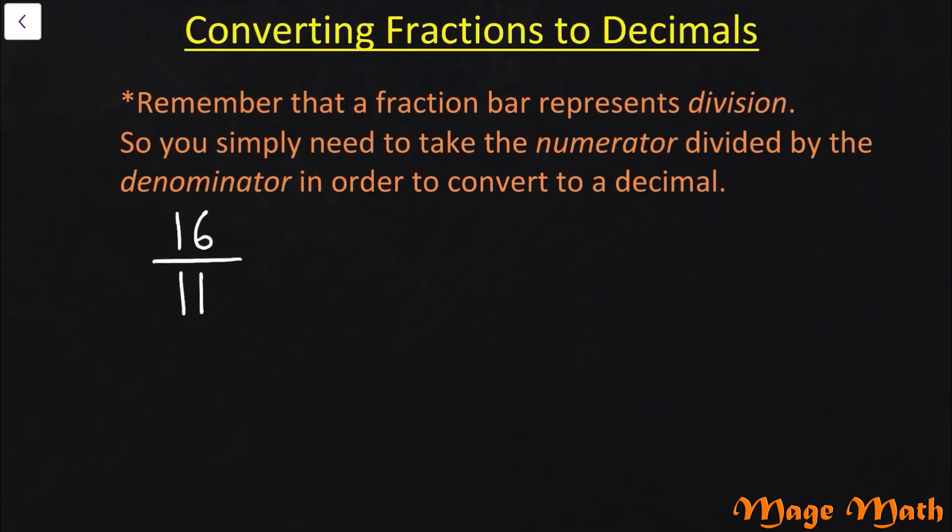Something else you could have is what we call an improper fraction, which is where the numerator is greater than your denominator. For example, we have a fraction here of 16 over 11, and certainly I think we can all agree that 16 is greater than 11. So unlike all the other examples, our numerator is the greater of the two numbers. That does not change our ability to be able to convert this fraction into a decimal. We're still looking at this as a division problem because that's what a fraction bar represents. So if we're doing 16 divided by 11, we can still set up a division problem for that.